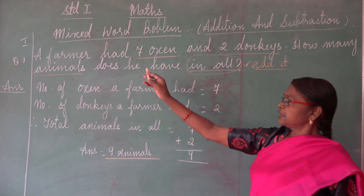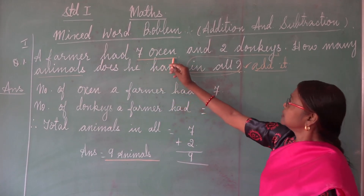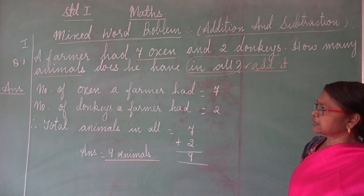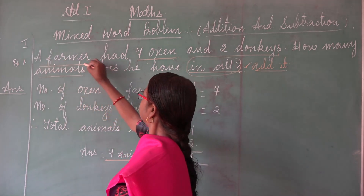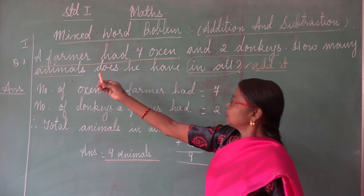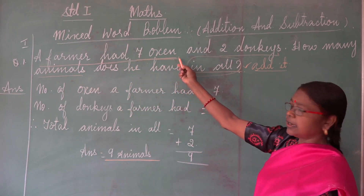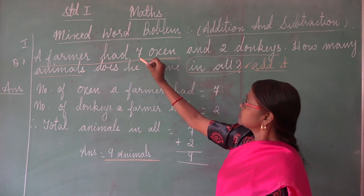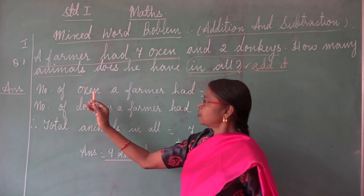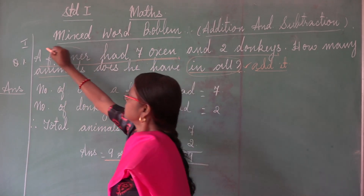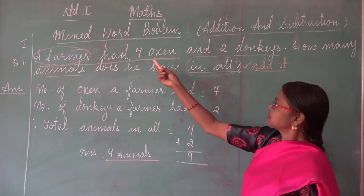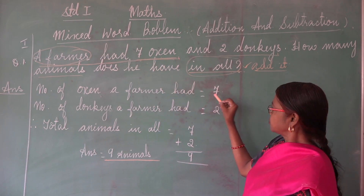Do you understand the question, children? A farmer had seven oxen and two donkeys — so how many animals does he have in all? Now, how will you begin to write the sentence? Look: 'A farmer had seven oxen.' This is the first sentence. We are going to write the statement from the beginning. So: Number of oxen a farmer had — is equal to seven.